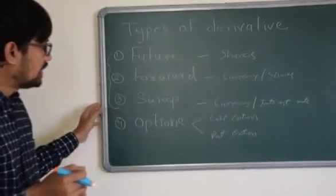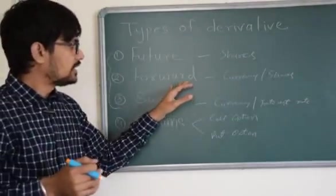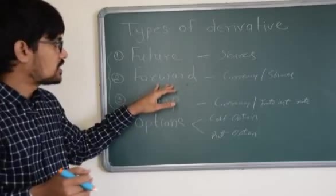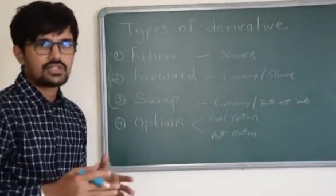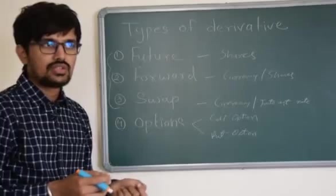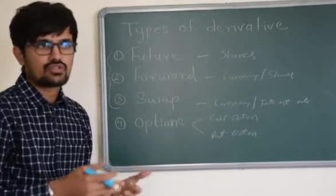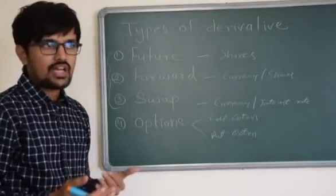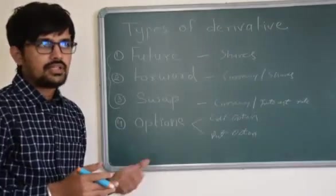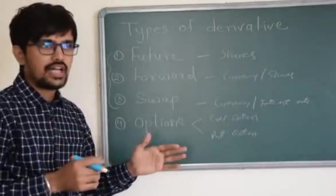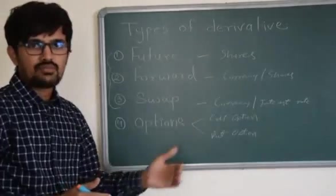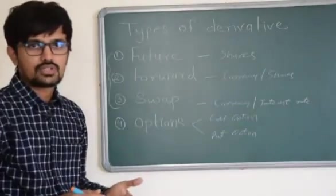In respect of forward contracts, these are generally used as hedging instruments. Say for example, company A has taken external commercial borrowing, that is ECB loan of say USD 1 lakh. And at the time of taking the loan, the market price of USD versus INR was say for example 60 rupees. So I have taken that loan in my books at the rate of 60 into 1 lakh, that is 60 lakh rupees. But the repayment terms are such that I need to pay this loan after 2 years. So I don't know what will be the price of USD after 2 years. So I want to hedge my position for repayment of that loan after 2 years.